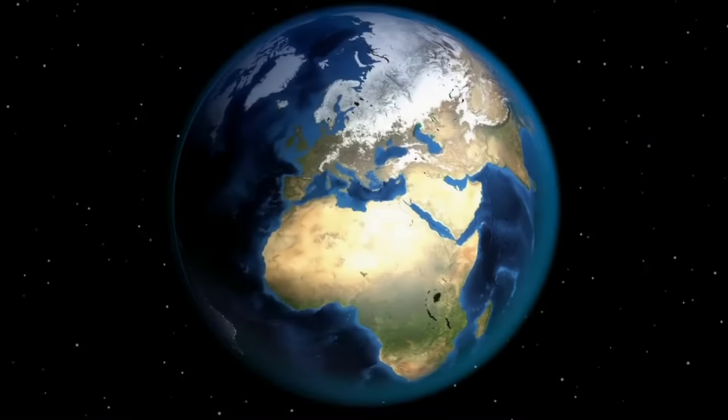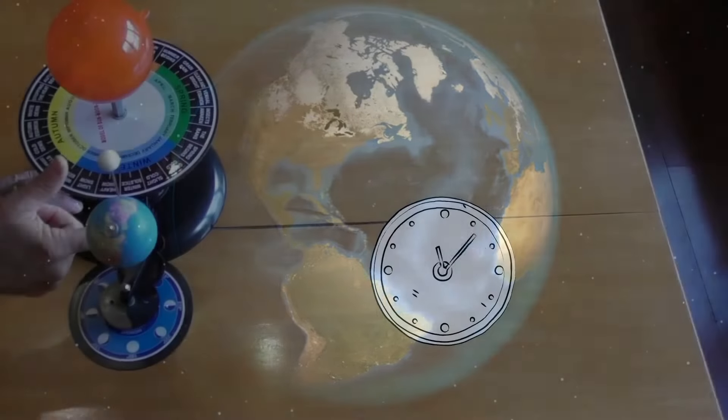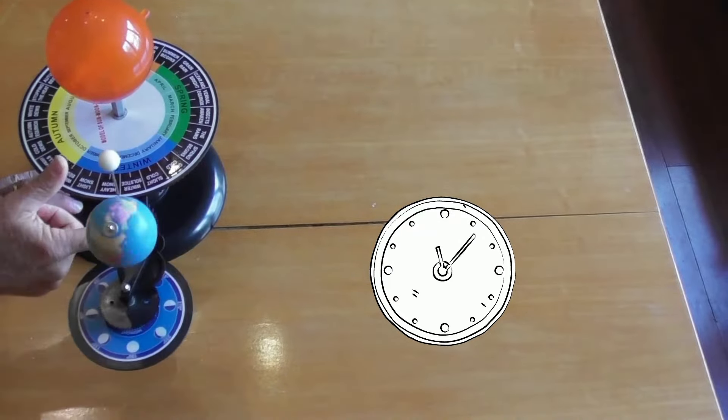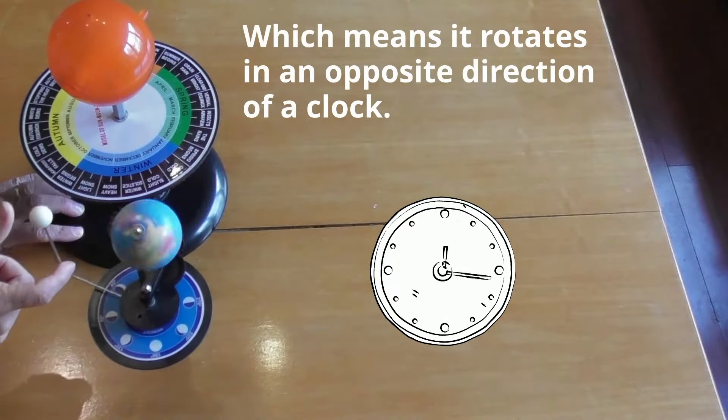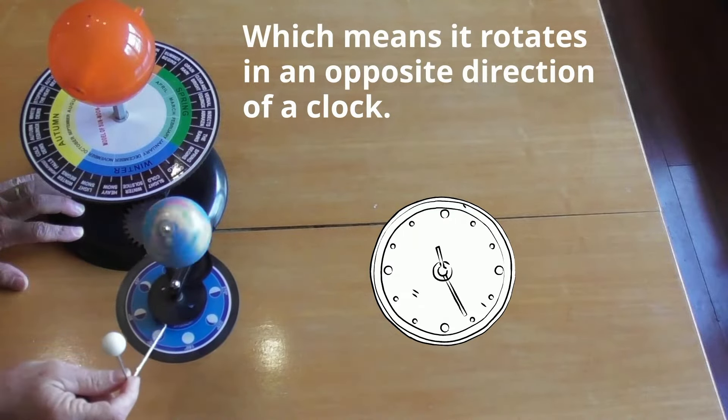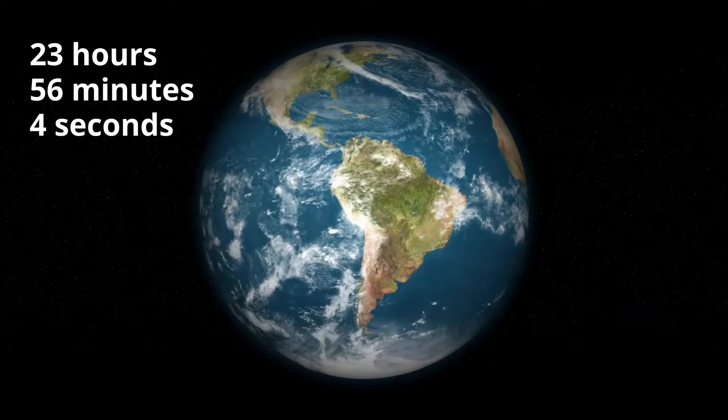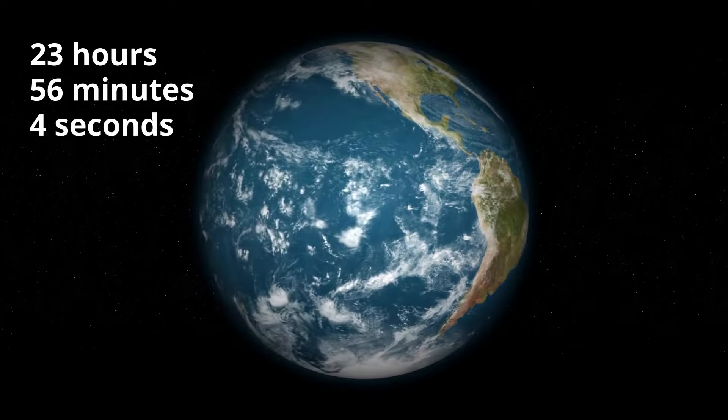Let's first talk about the Earth's rotation. The Earth rotates in a counterclockwise manner, which means that it travels in an opposite direction of a clock. It takes the Earth 23 hours, 56 minutes, and 4 seconds to make one full rotation. We just round that to 24 hours.